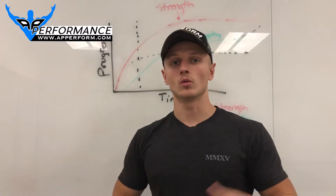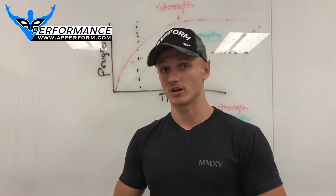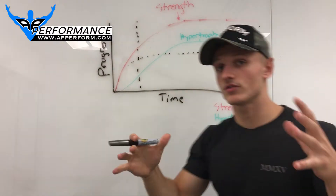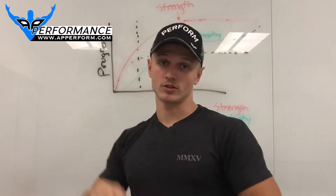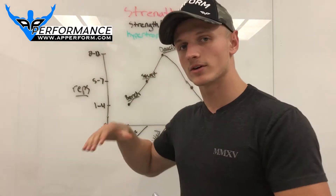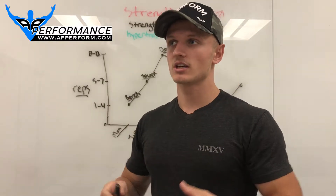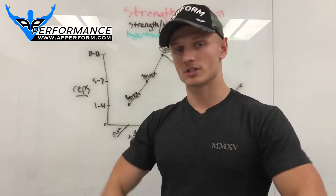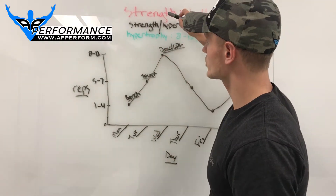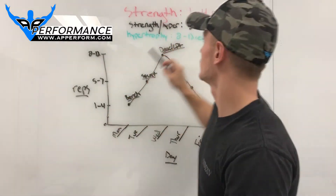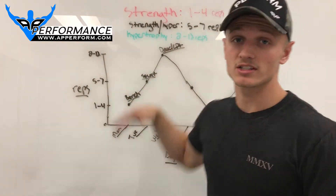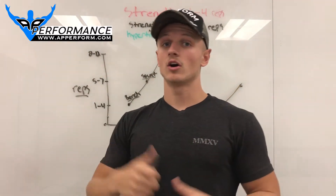If you combine strength and hypertrophy, this neuromuscular adaptation can increase, which in turn can increase hypertrophy. Daily undulating periodization is simply manipulating different rep ranges each day to increase the neuromuscular component, the strength, and the hypertrophy. Strength is in the one-to-four rep range, strength and hypertrophy combined is five to seven, and hypertrophy itself is eight to twelve.